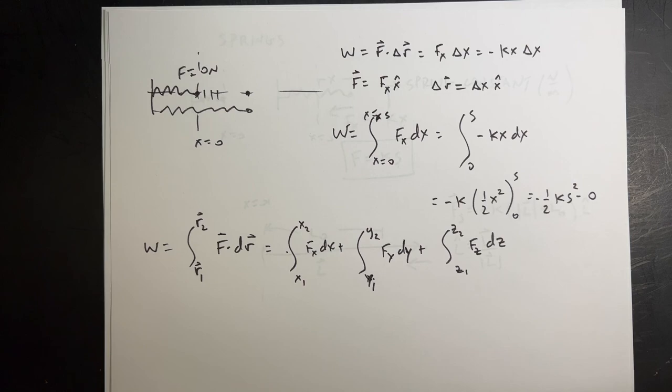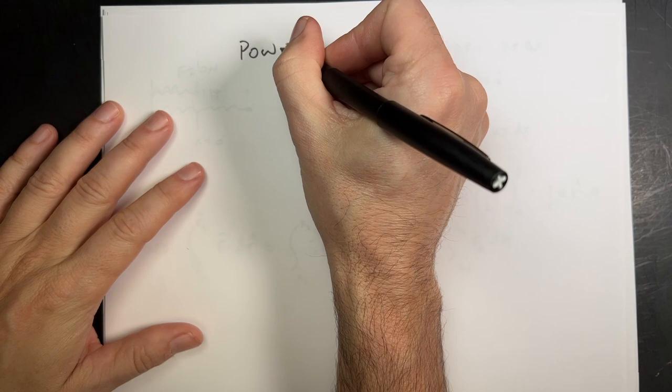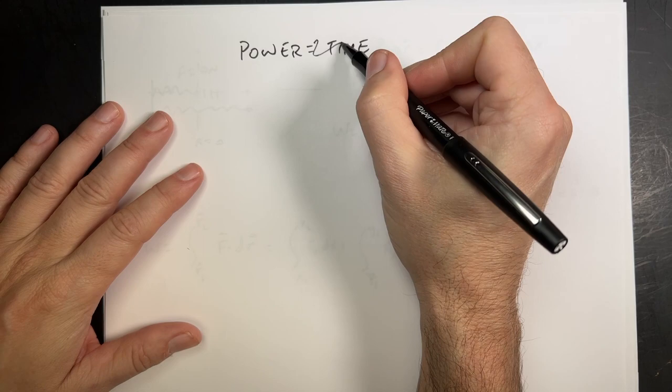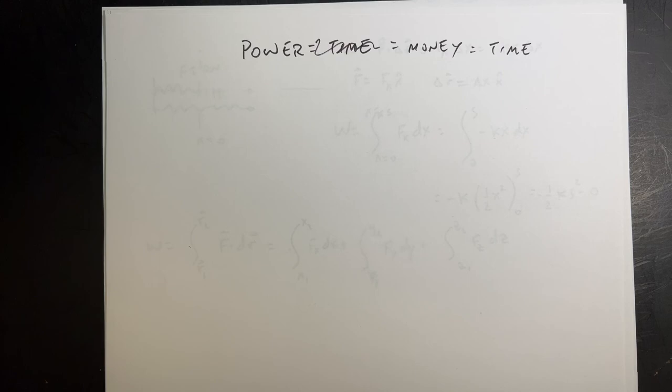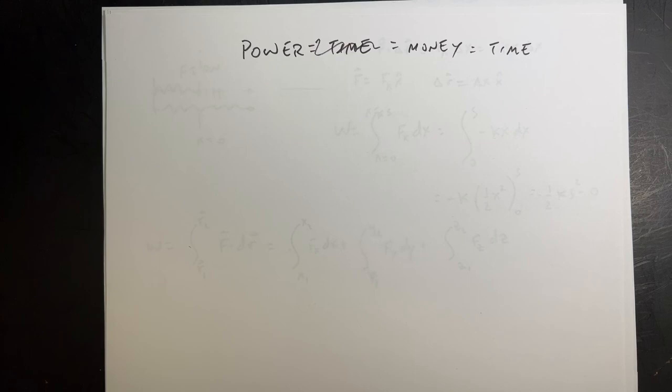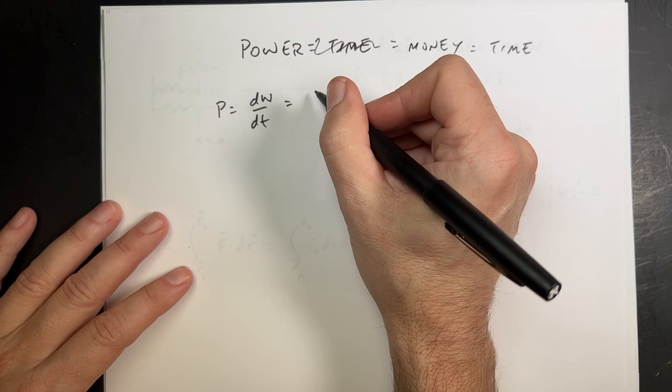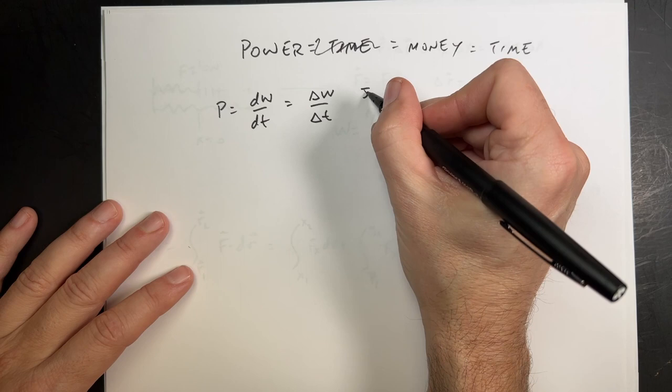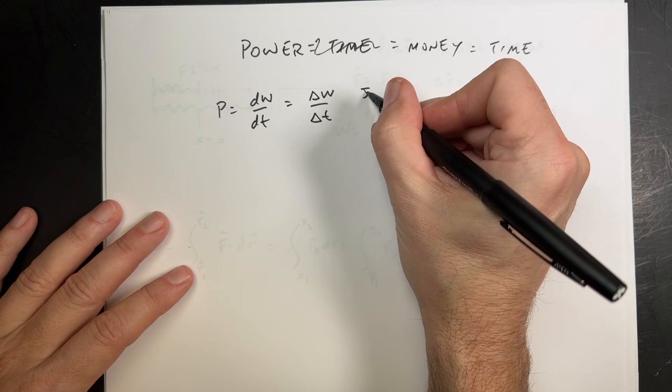One last thing is power. We define power as the rate of change of work: dW/dt, or delta W over delta t. Power has units of joules per second, which equals a watt. So power is how fast you do work.